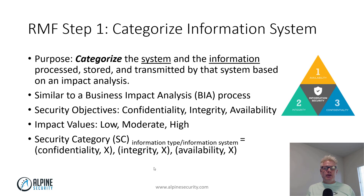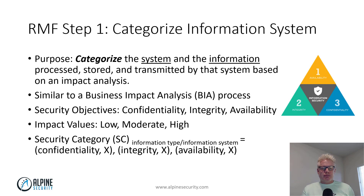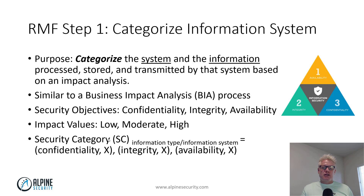The security objectives are CIA — confidentiality, integrity, availability — and then we look at the impact values and rate those low, moderate, or high. Remember, risk is the intersection of the impact and the probability. We then assign a security category, or SC, which is assigned per information type or per information system for confidentiality, integrity, and availability. Those values are replaced with low, moderate, or high, and this helps us determine how to best implement controls to protect that data.